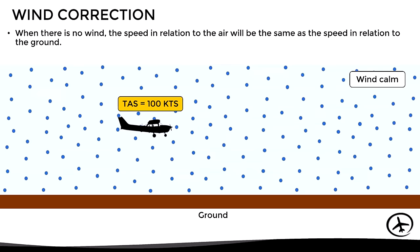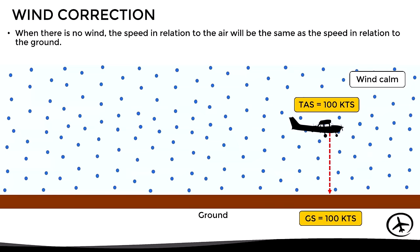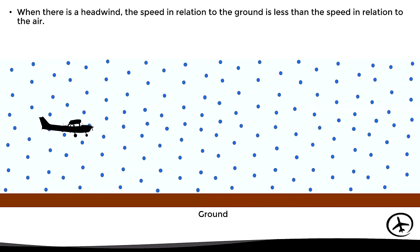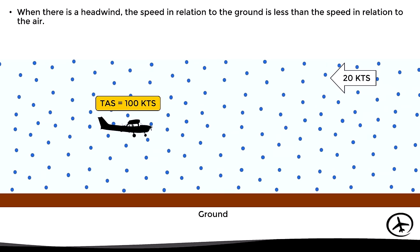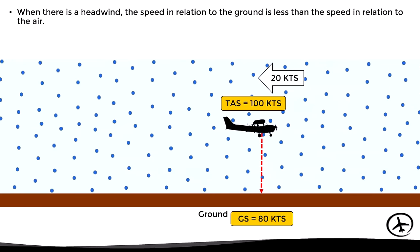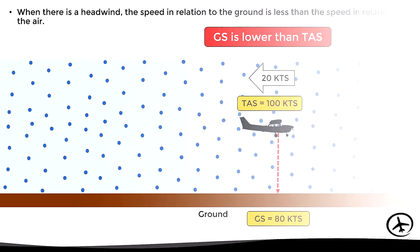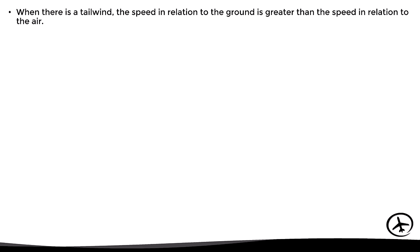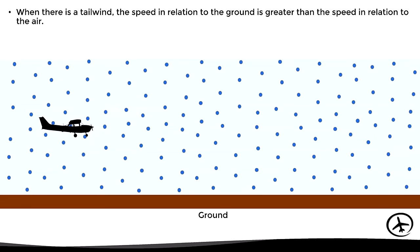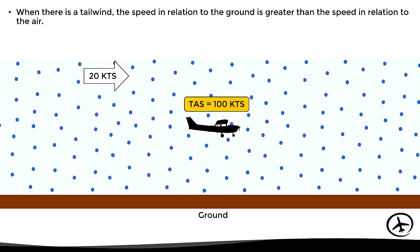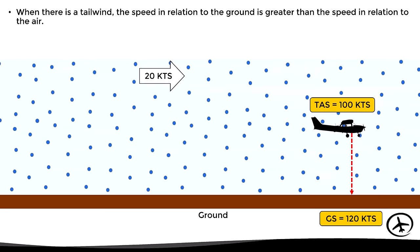For example, an aircraft flying at 100 knots true airspeed in calm air has a ground speed of 100 knots. With a headwind of 20 knots, the aircraft moves at 100 knots relative to the air mass but the air mass pushes against it, so ground speed is 80 knots. With a tailwind of 20 knots, the aircraft travels at 100 knots through the air while the air mass moves in the same direction at 20 knots, resulting in a ground speed of 120 knots.